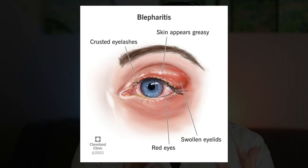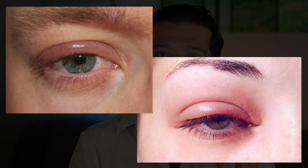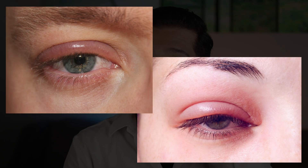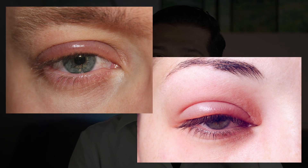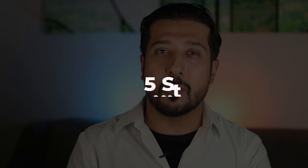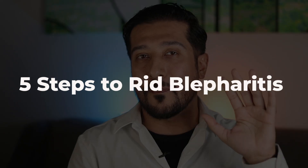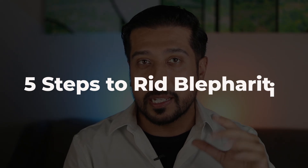Today we're going to talk about something a lot of people deal with but don't always know how to handle: blepharitis. It's an eye condition that can cause irritation, redness, and discomfort along the eyelids. If you're struggling with itching, crusting, or general irritation around your eyes from blepharitis, you're not alone. Stick around because I'll walk you through a simple 5-step method for blepharitis.